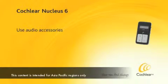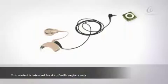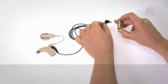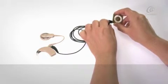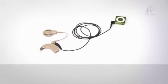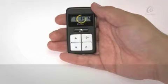Use audio accessories. When you connect an audio accessory to your CP910 sound processor, the accessory will turn on automatically and your remote control will display the accessory icon.